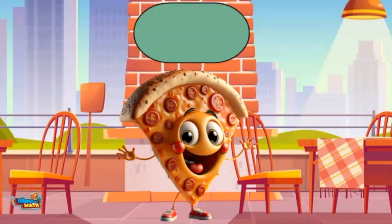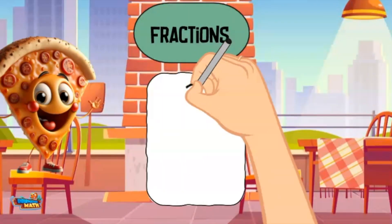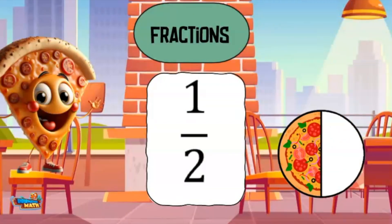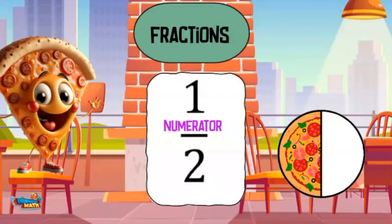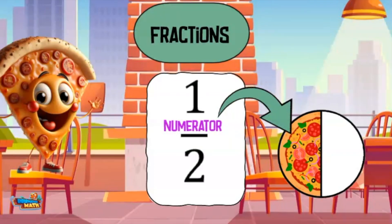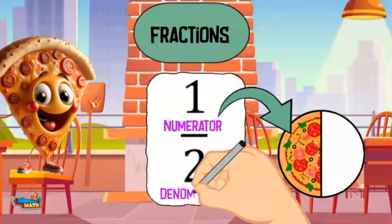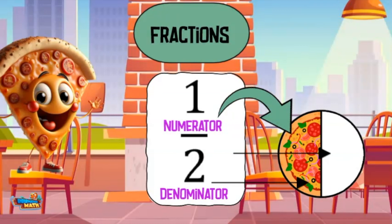Today's lesson is about fractions in numeral word form. Fractions are used to represent a part of a whole. A fraction looks like this: the top number of the fraction is called the numerator, which represents a part of the whole being represented. The denominator is the bottom number and represents the number of equal parts it takes to make the whole.